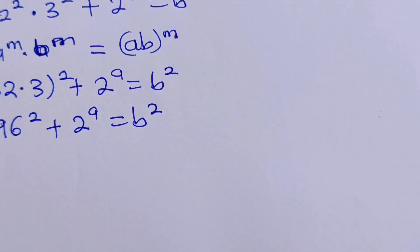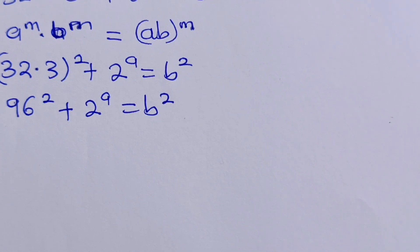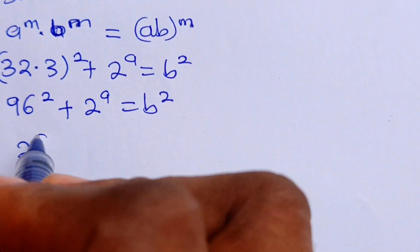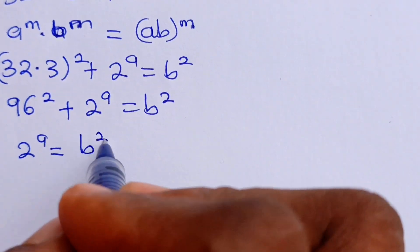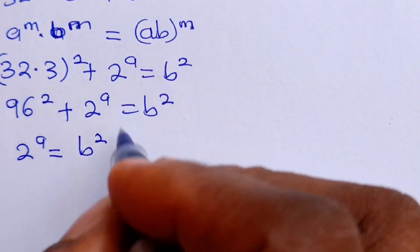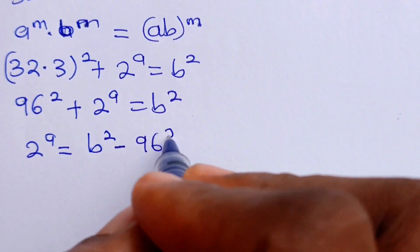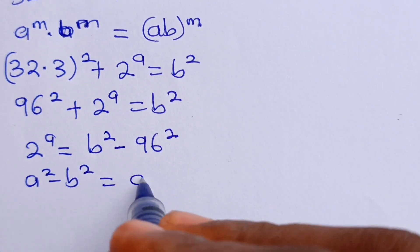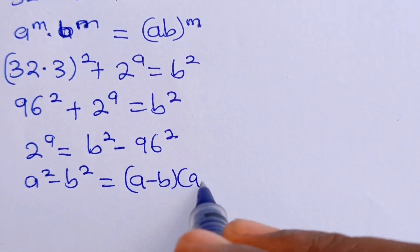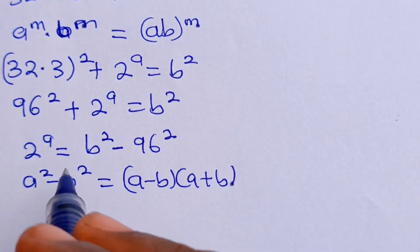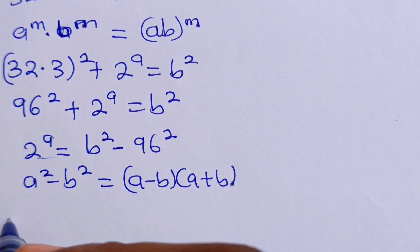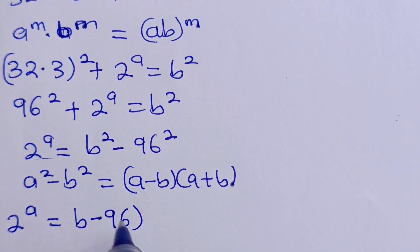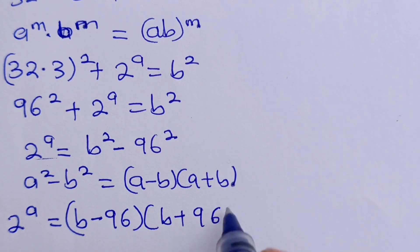Now let's make 2 to the power of A the subject of the formula so that we can get the value of A. We can say 2 to the power of A is equal to B squared minus 96 squared. Remember that when you have A squared minus B squared, that is equal to A minus B multiplied by A plus B. So that means we can rewrite this as 2 to the power of A is equal to B minus 96, multiplied by B plus 96.